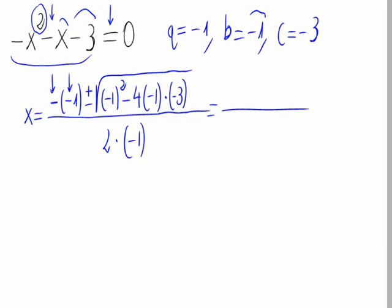That is equal to, minus minus is plus, so plus 1, plus minus the square root of, -1 square is 1, minus 4 times -1 times -3, that would be -12, divided by 2 times -1, which is -2.